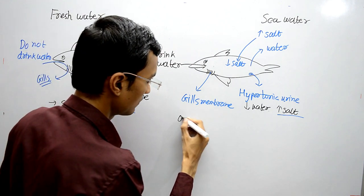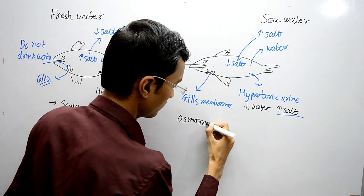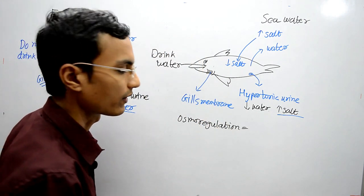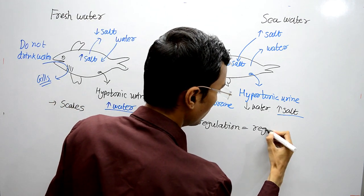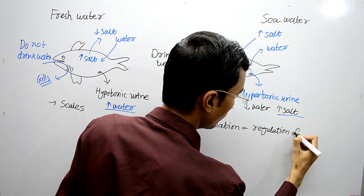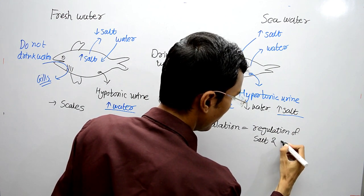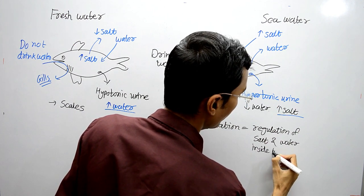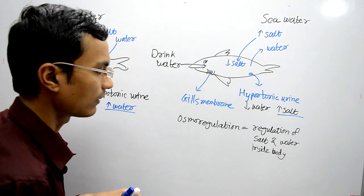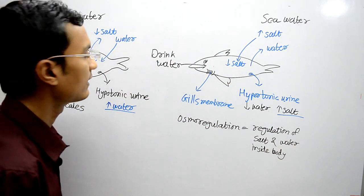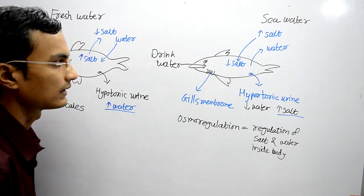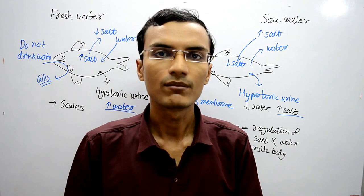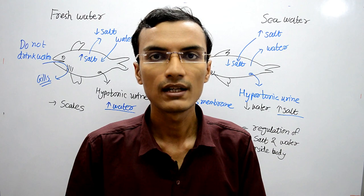So that is the water balance and salt balance in sea water fishes. Osmoregulation is the regulation of salt and water inside the body. This is how osmoregulation is done in freshwater and sea water fishes. I hope this video is helpful — if you watched till here, please hit the like button, share this video with your friends, and subscribe to my channel. Thank you for watching.